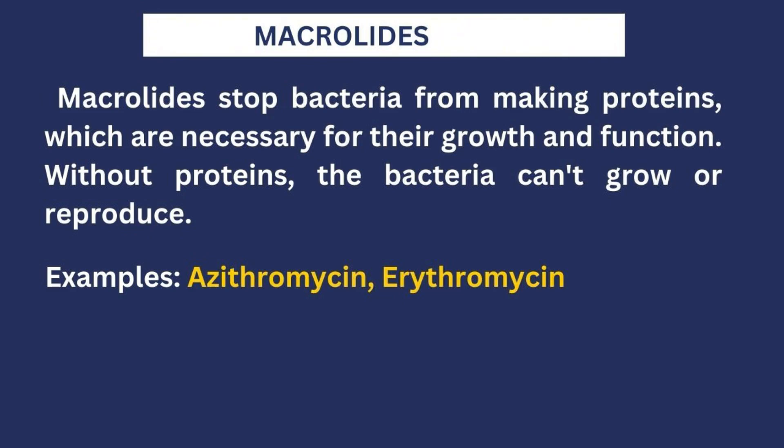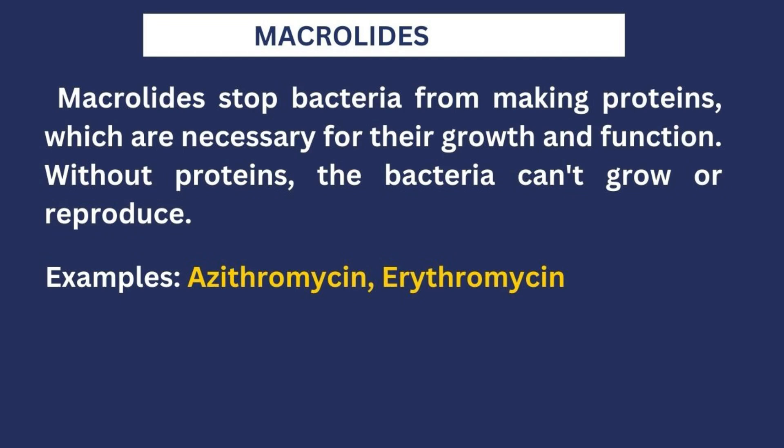Just like any other organism, bacteria need protein to grow, reproduce, and spread infection in your body. What macrolides do is stop bacteria from making the proteins necessary for their growth and function. Very common examples of macrolides are azithromycin and erythromycin. Once bacteria are stopped from making the proteins they need, they become static, and the immune system takes over and clears them out.